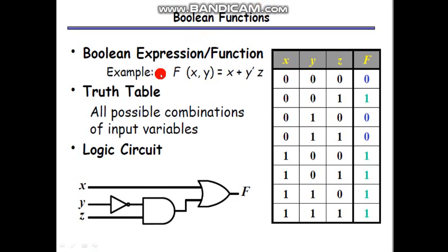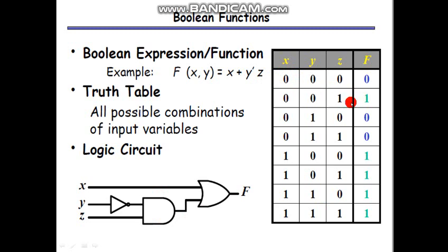As a Boolean function example, the function f(x,y) equals x plus y bar times z. Depending on this function, the logic circuit is generated. For instance, x·y bar·z is realized as a circuit, and the logic diagram for x·y bar·z is shown here.